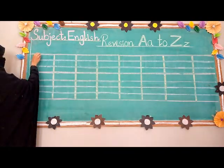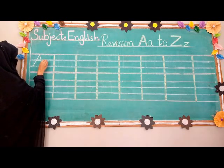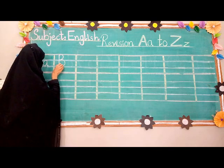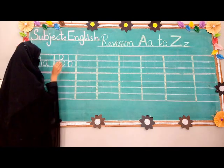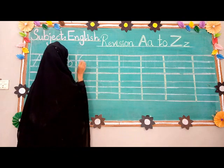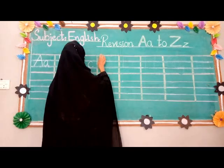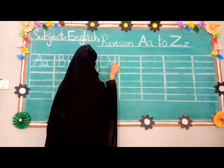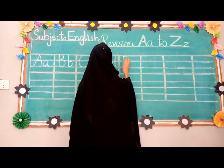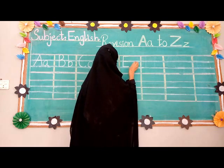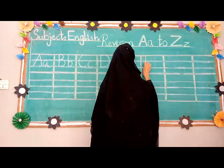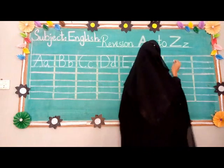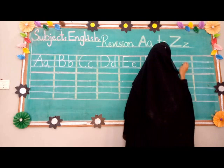The name is A, and the sound is A. The name is B, and the sound is B. The name is C, and the sound is K. The name is D, and the sound is D. The name is E, and the sound is E. The name is F, and the sound is F. The name is G, and the sound is G.